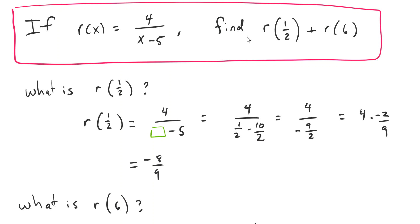So say for example we have a function — we'll call it r. Our function's name is r, and r is 4 over x minus 5. What if they ask us to compute r of 1 half plus r of 6?